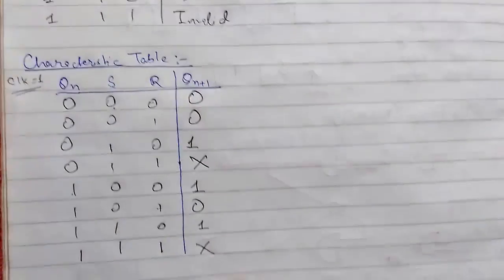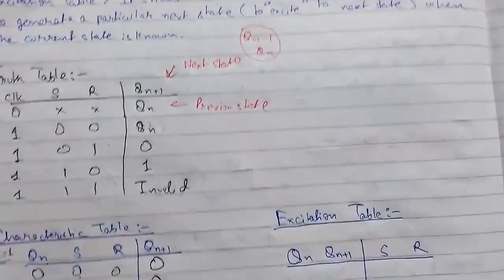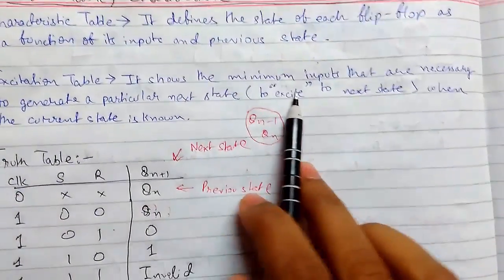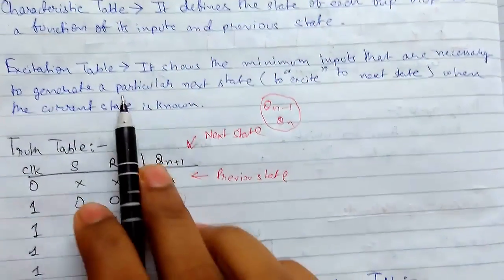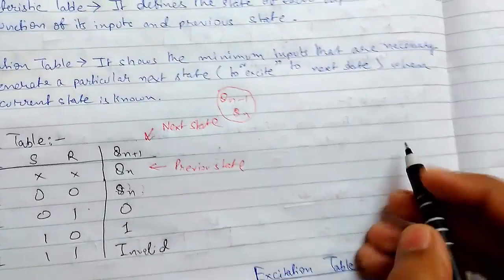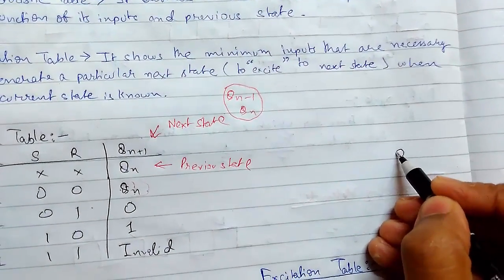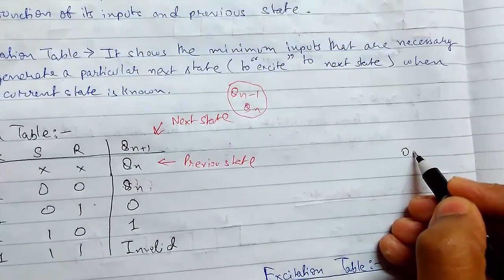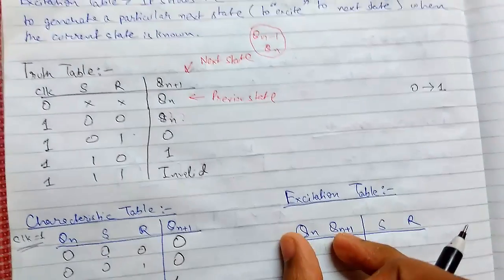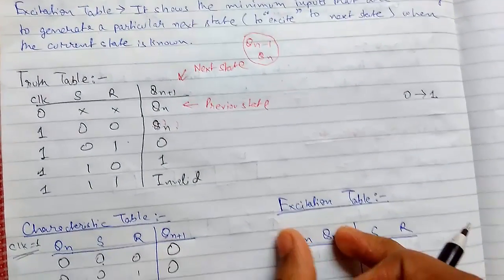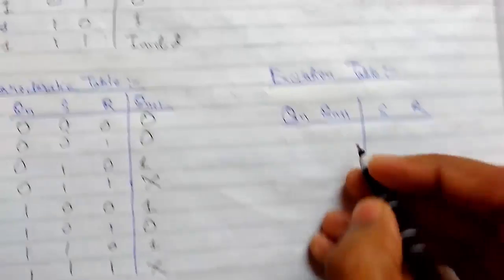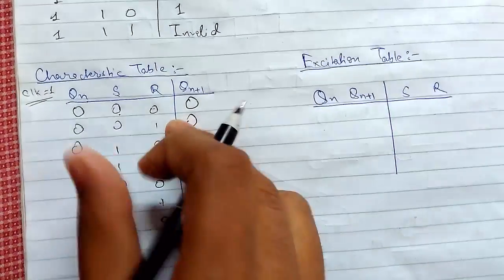This was the characteristic table. Now we will see what the excitation table is. The excitation table shows the minimum inputs that are necessary to generate a particular next state — that is, the minimum number of inputs required to change from one state to another when the current inputs are known and the current outputs are taken as input.